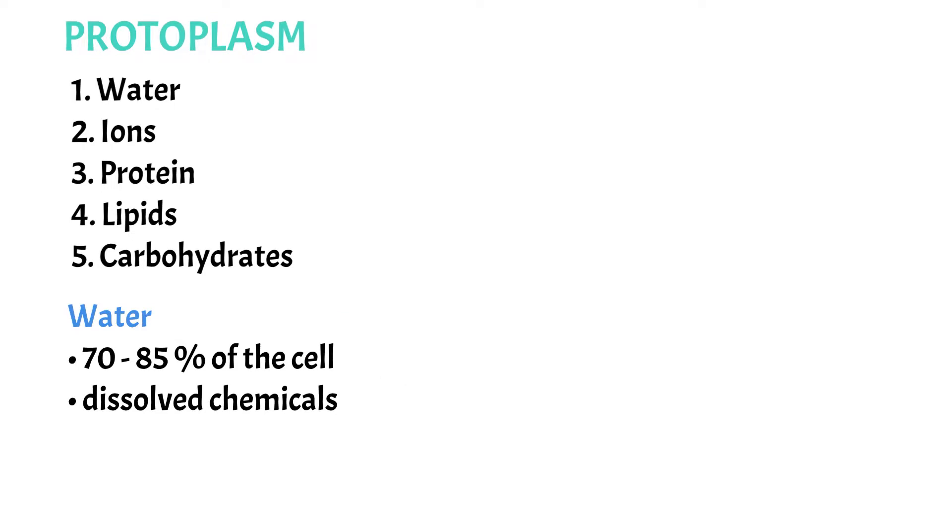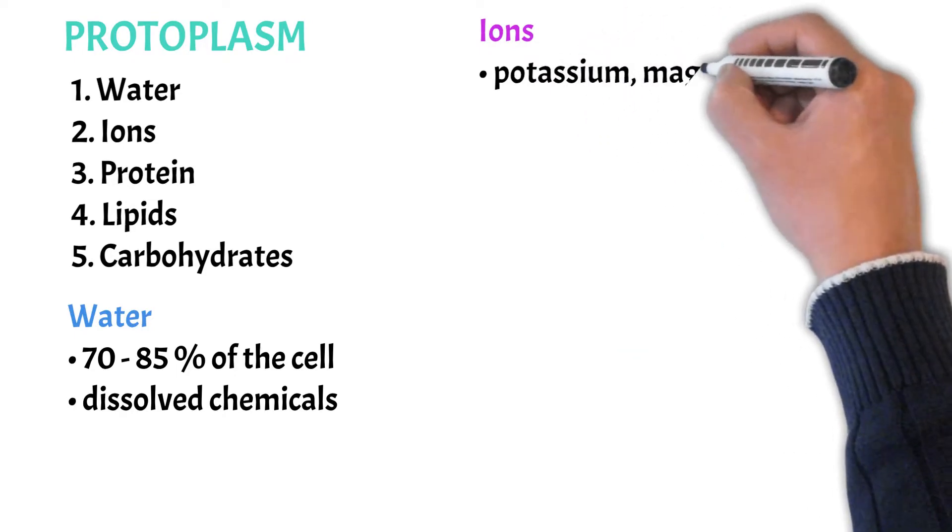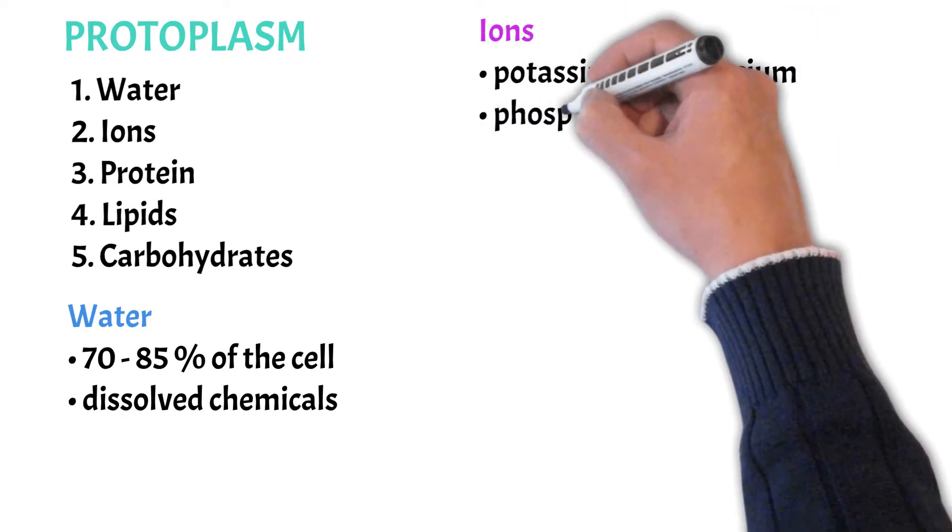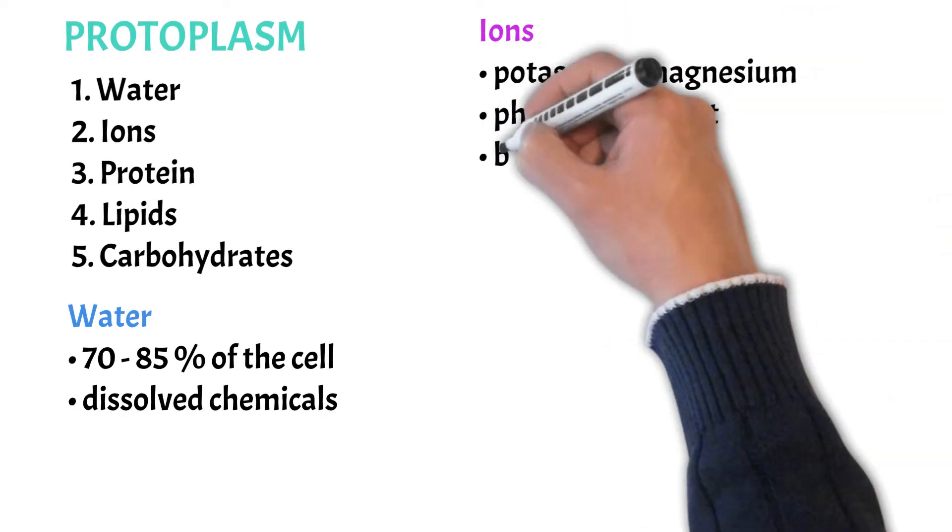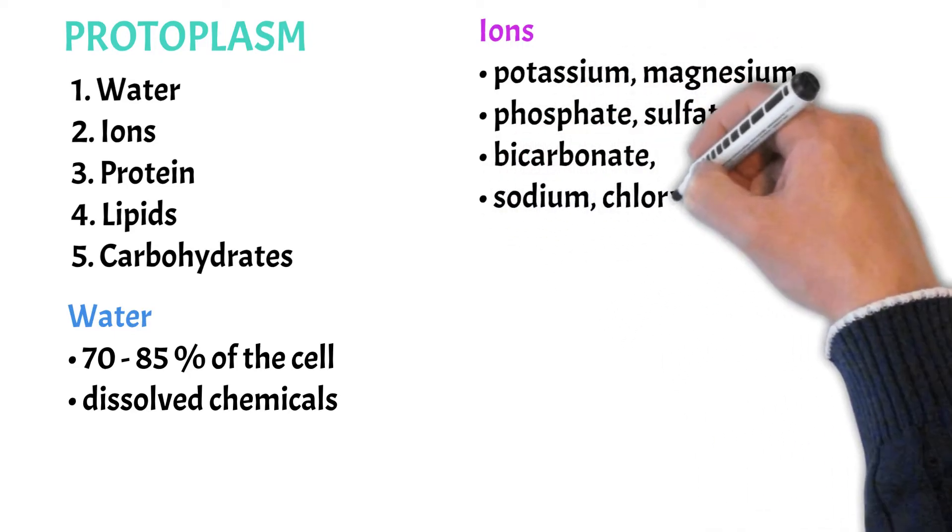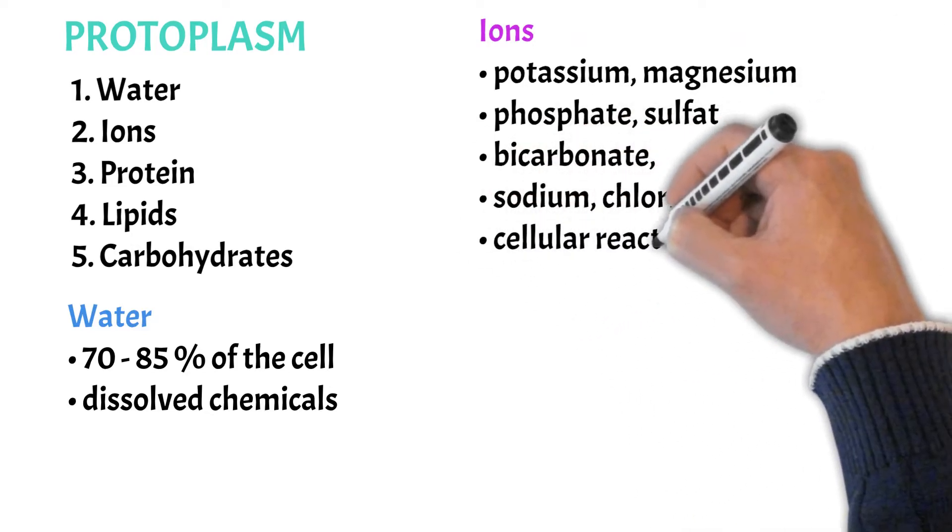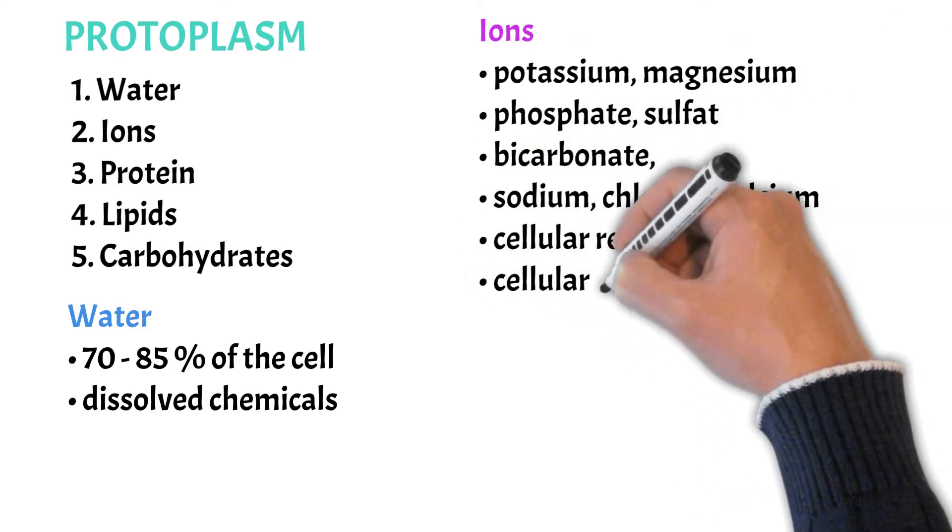Then we have ions. The most important ions found in the cell are potassium, magnesium, phosphate, sulfate, bicarbonate, but also sodium, chloride and calcium. The cell needs them for cellular reactions but also for some of these cellular control mechanisms.